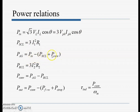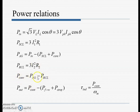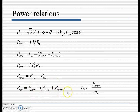Rotor copper loss = 3I₂²R₂. P_convert = P_air_gap − rotor copper losses. Finally, output power P_out = P_convert − (friction and windage loss + stray losses), from which the output torque is calculated.